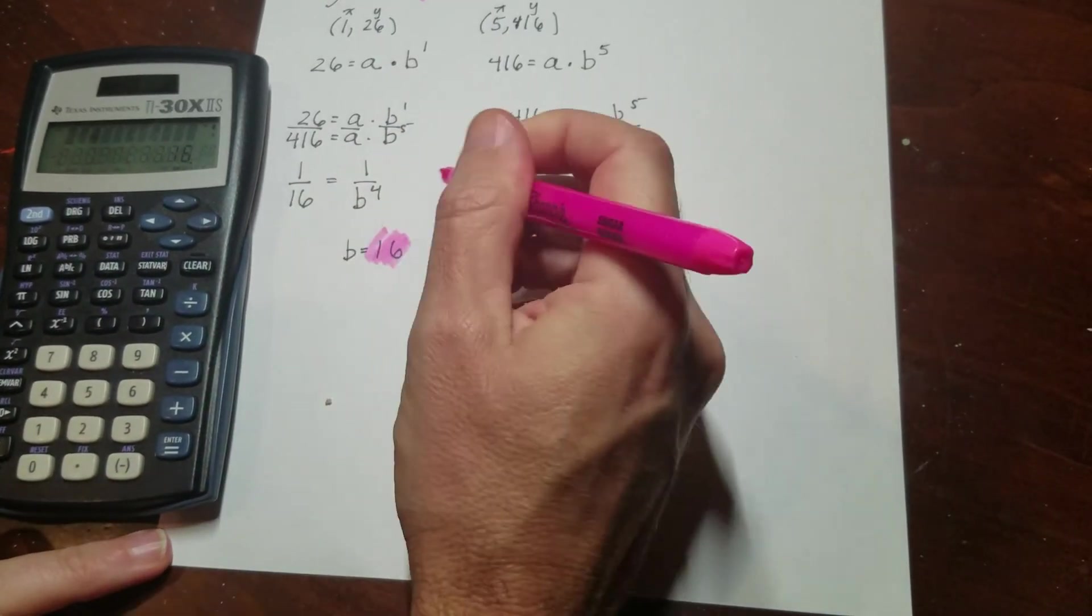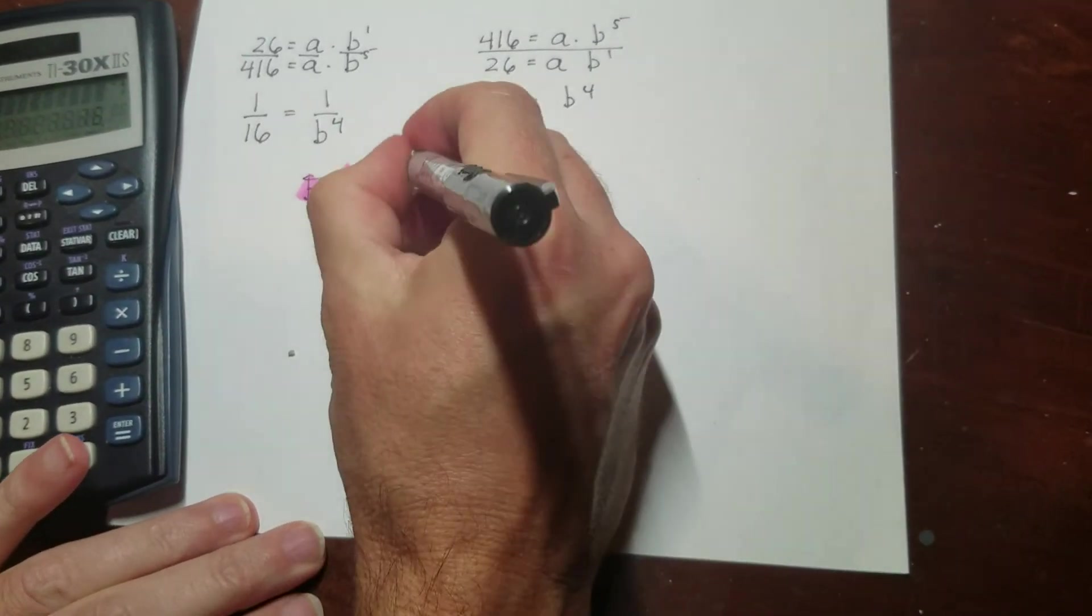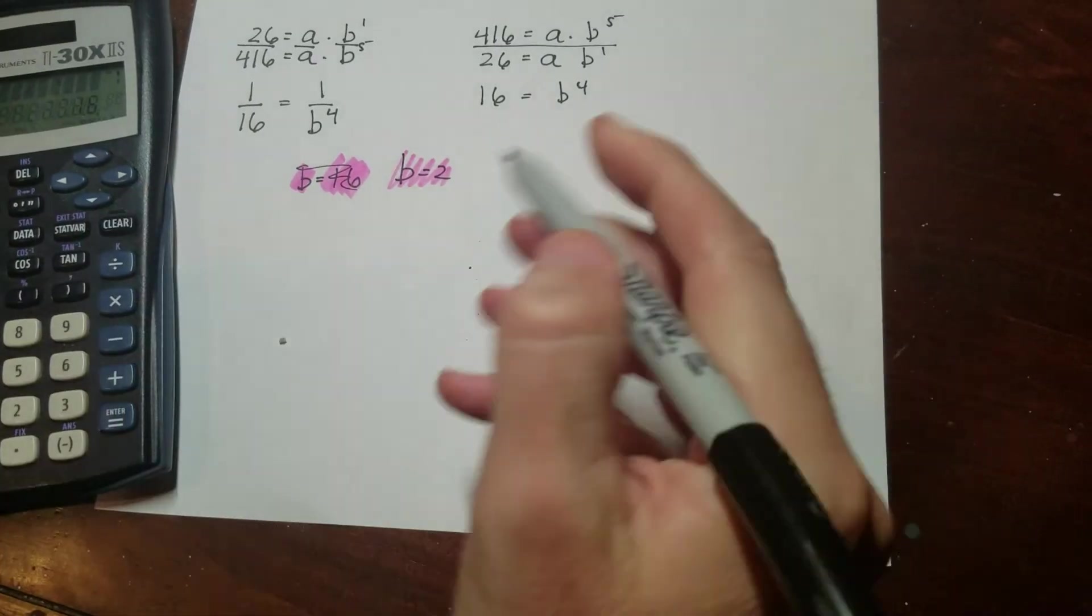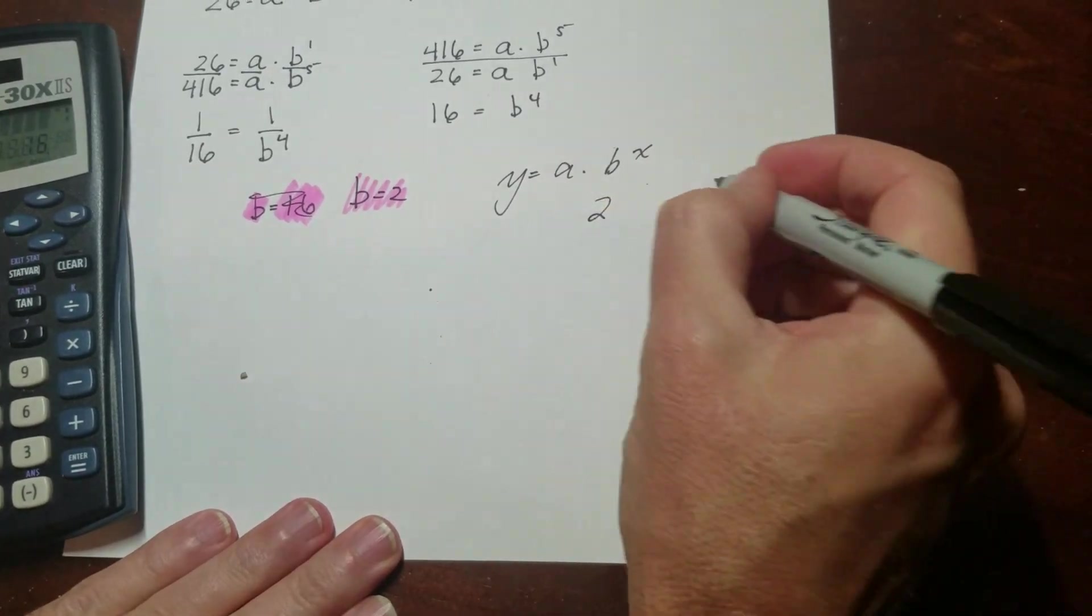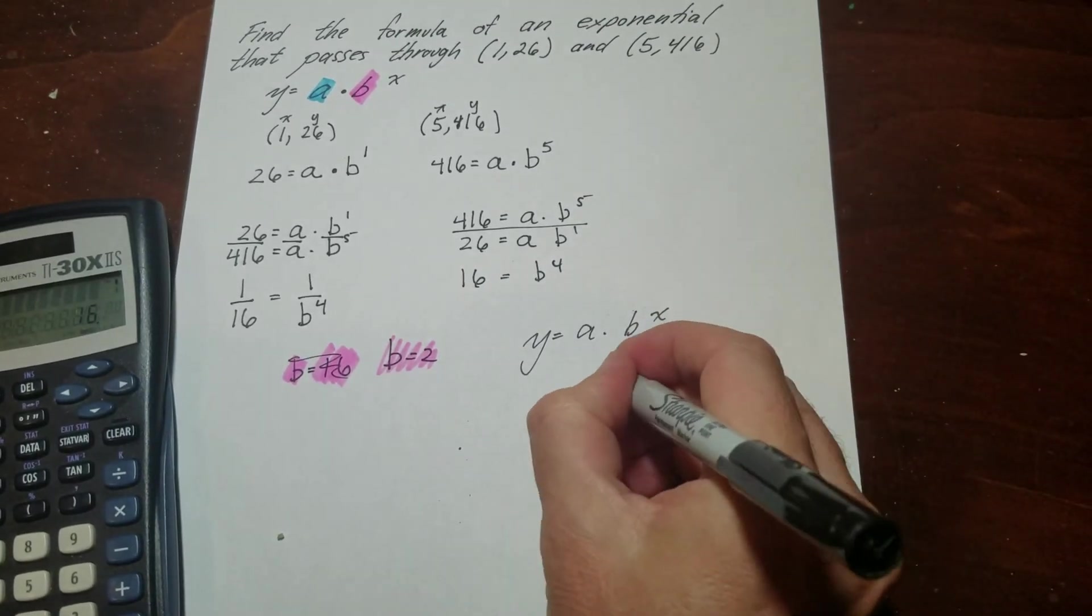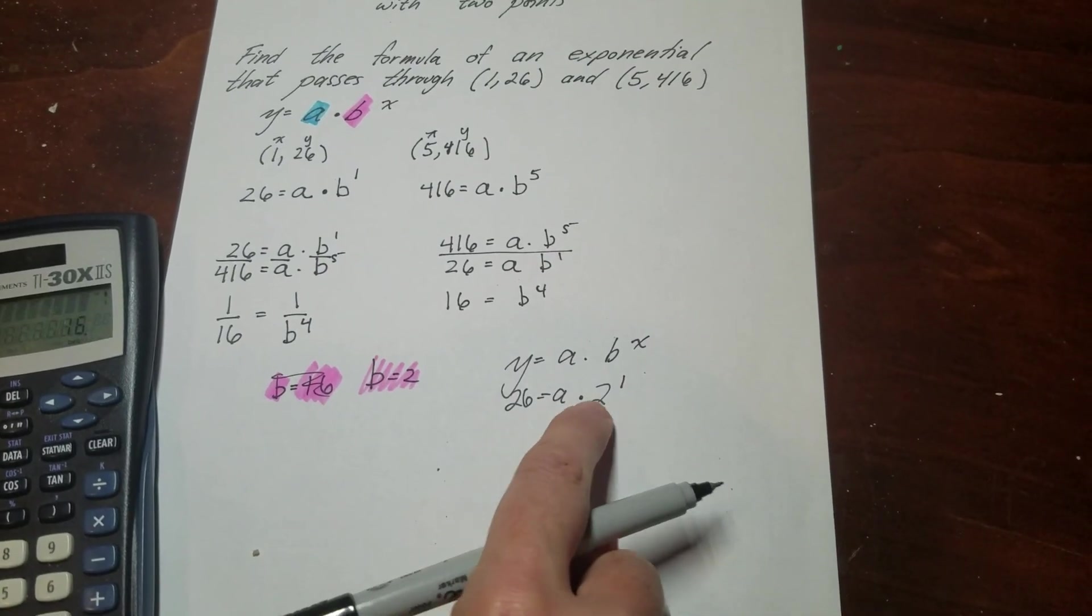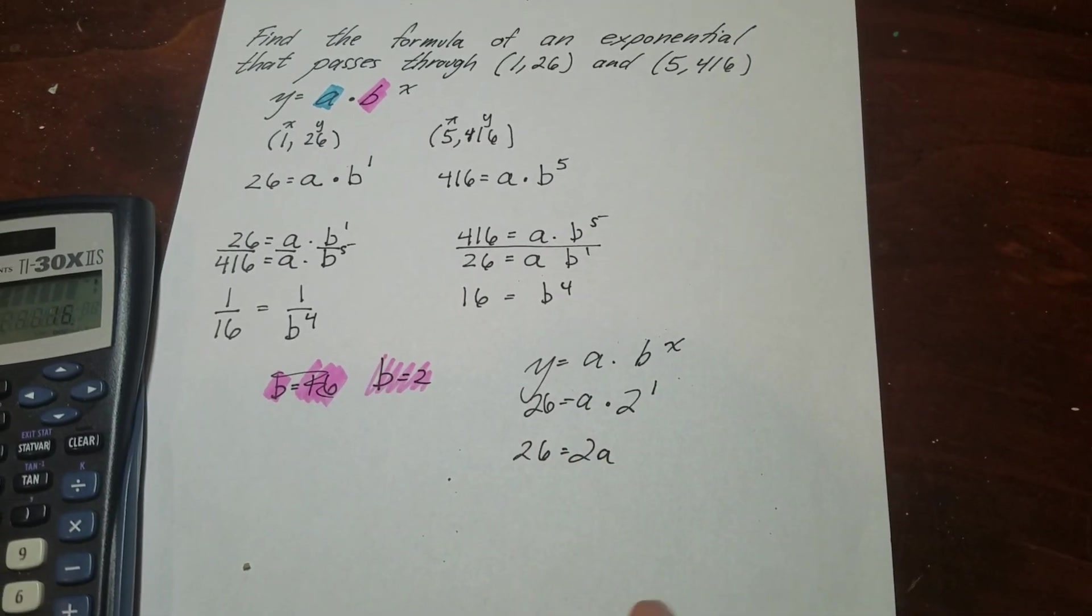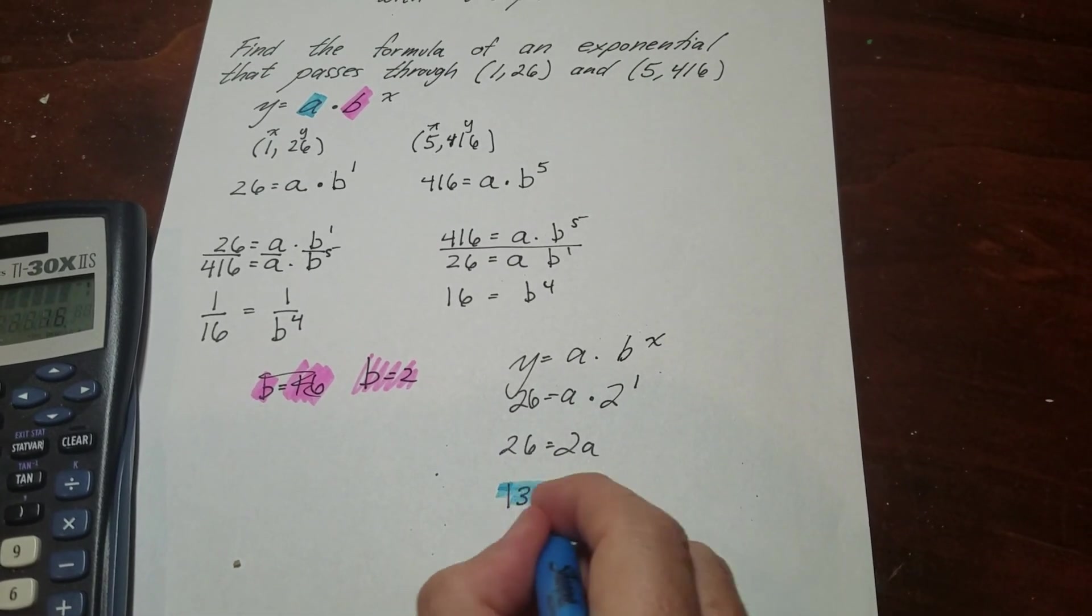And just like you do with lines, once you know what the b term is, you can substitute that into the equation to figure out the rest of it. So we already know that the formula is y equals a times b to the x. I just figured out that b is 2. And what I'm going to do is substitute one of these points in again. So I'm going to put 1 here, and then 26 over here. So there's my equation: 26 equals a times basically 2, which can be written like that. And 2 times something is 26. Well, that's not hard at all. That's 13. So now I know that my a term is 13.